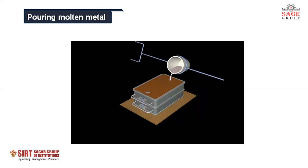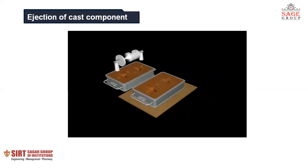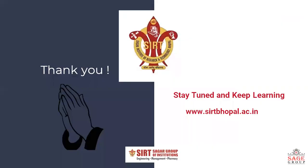After providing channels and ingates, the molten metal is poured. After pouring, some time is given to solidify the melt, and afterwards the casting is ejected. So this is the whole process of casting which is performed to form a desired component.